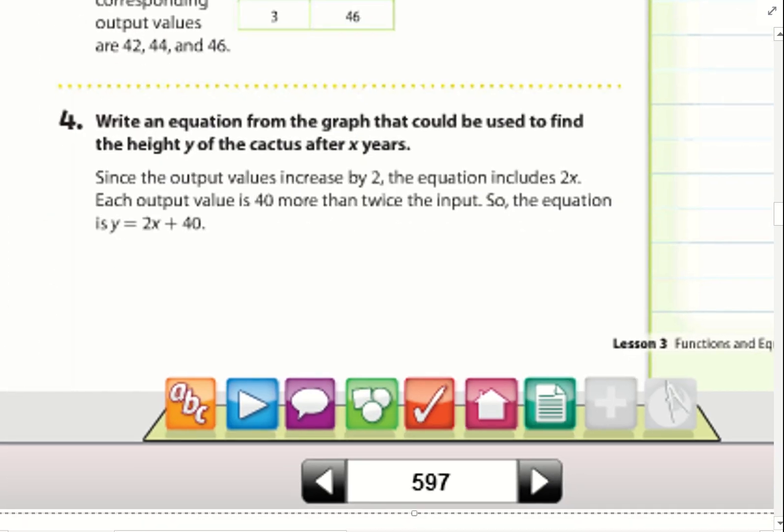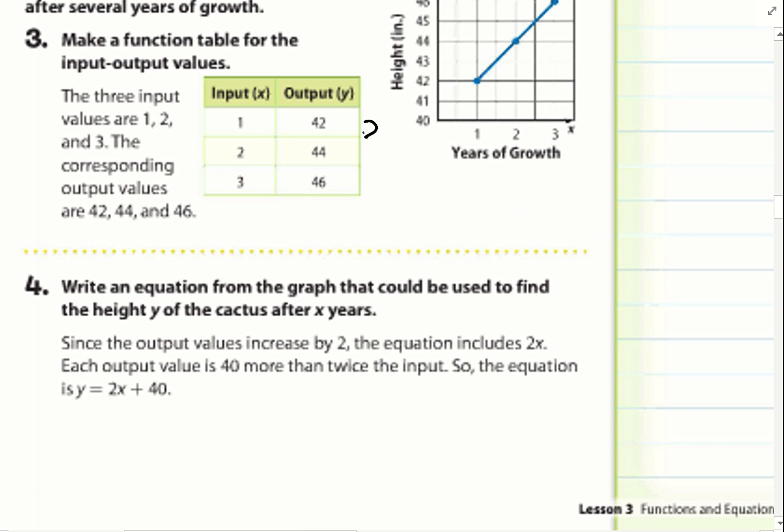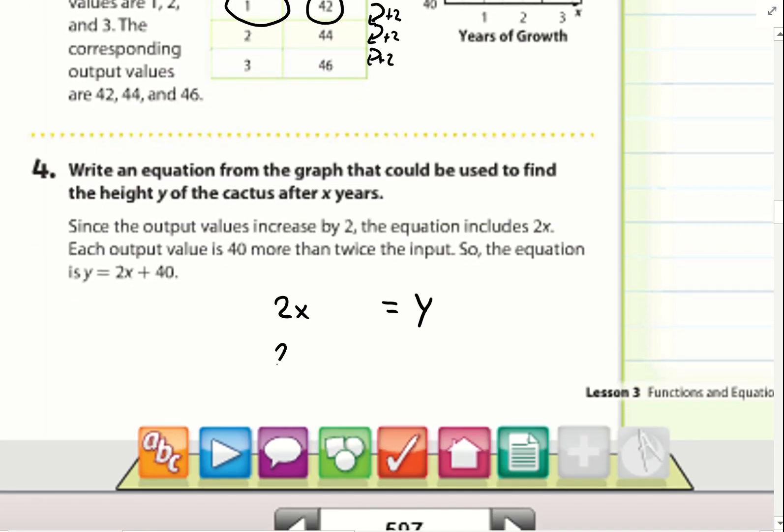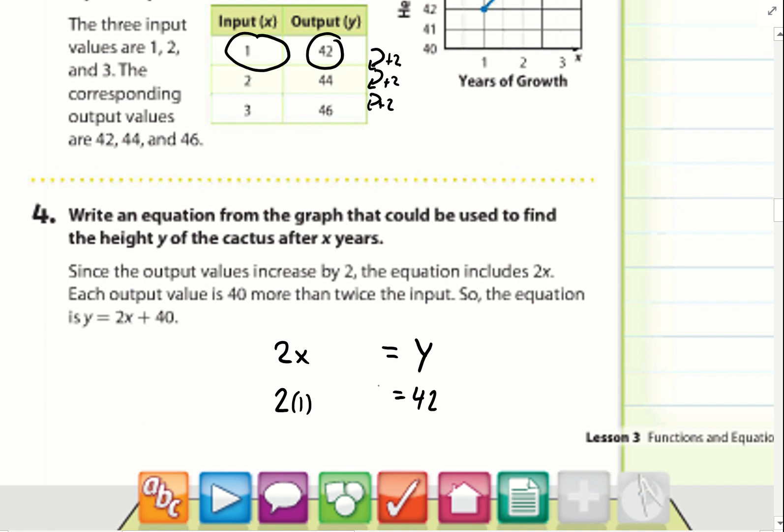Number 4: write an equation from the graph that could be used to find the height y of the cactus after x years. If I notice here, we're adding 2 each time, plus 2, plus 2. So I know my equation is going to have 2x. So my 2x is going to equal y. Now, here comes the tough part. I need to add... I'm going to use these numbers here. I know when x equals 1, y has to equal 42. So here's 2 times 1, and my y is going to equal 42. What do I need to do for my equation to be true? Because 2 does not equal 42, but if I add 40, 2 plus 40 does equal 42. So if I have the equation 2x plus 40 equals y, this is going to be my equation for my function.